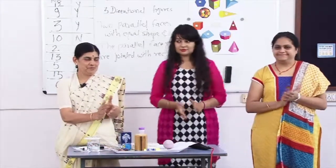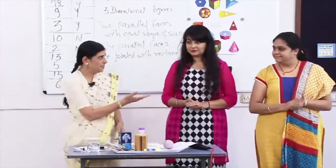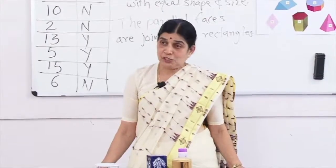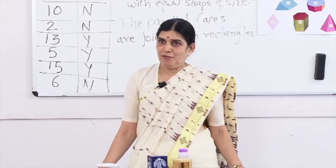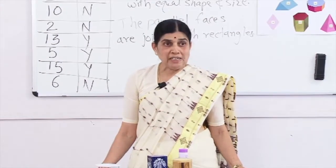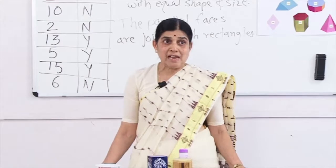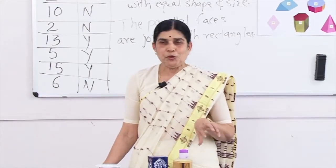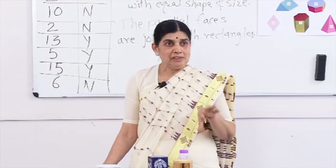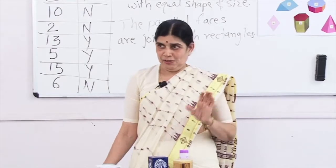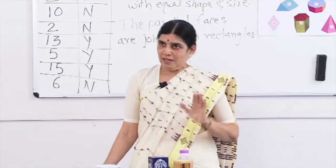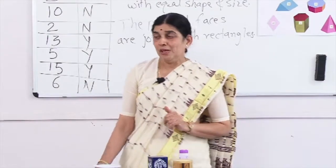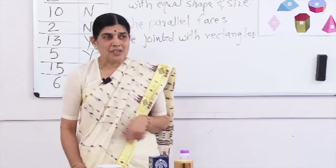A CD is a non-example because it does not have any rectangles and it is not 3D. A paper is 2D. A box is an example — it is rectangular, opposite sides are the same, and it is 3D. Now you have attained the concept — very good. You can take your seat.